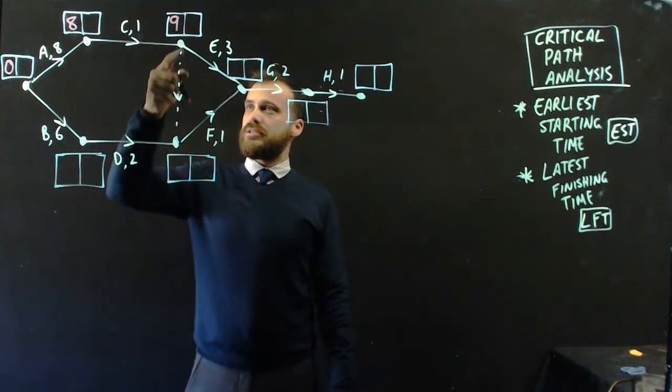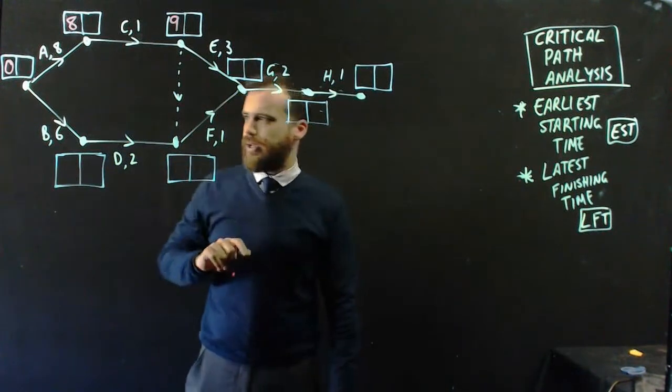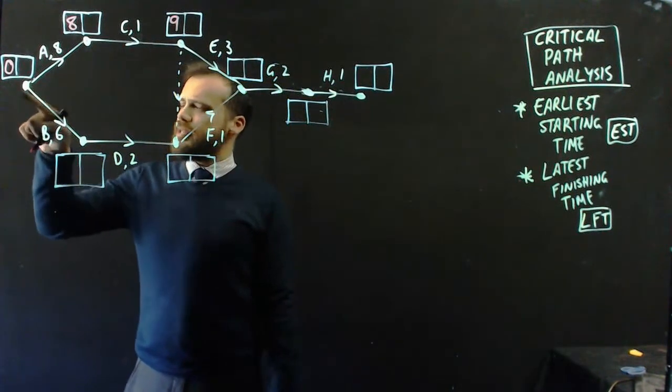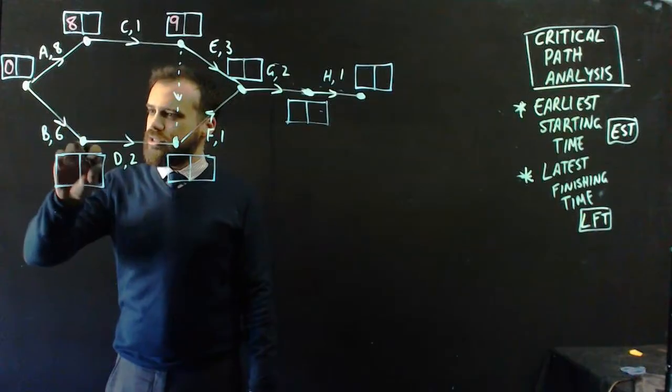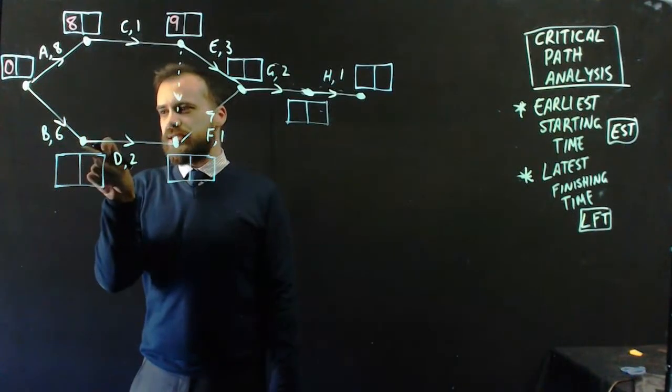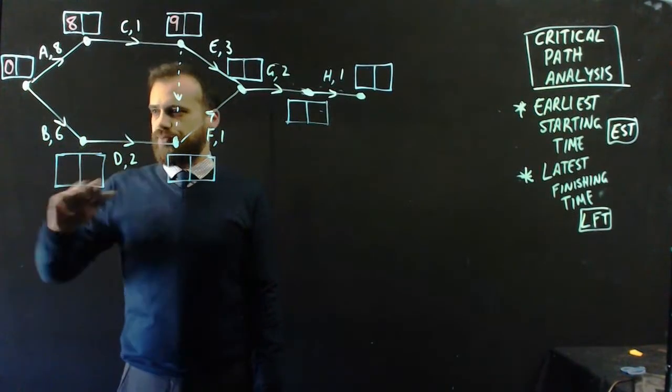Now let's keep following... No, let's go the other way. What about B? Well, B started at the whistle, and it took six hours to do. So that means it takes six hours to get to this dot. Six.